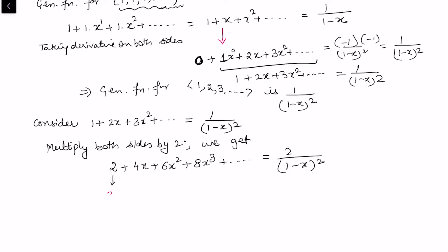So a₃ comes with x³ and so on — no term is skipped. We get the sequence 2, 4, 6, 8, ... Sometimes I use these parentheses or open parentheses — they both represent the same thing.